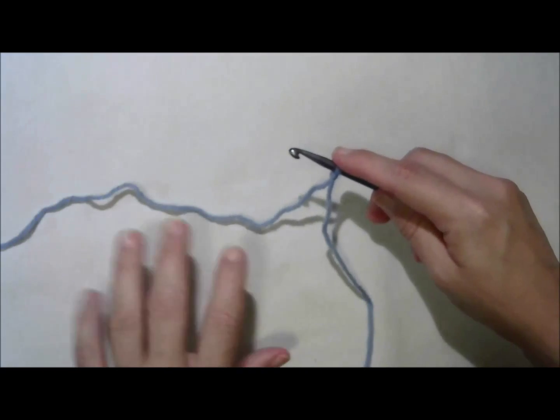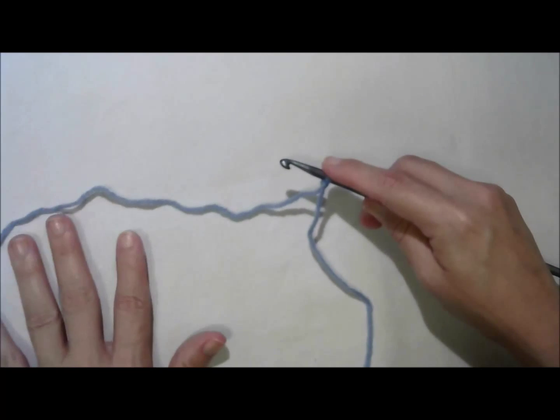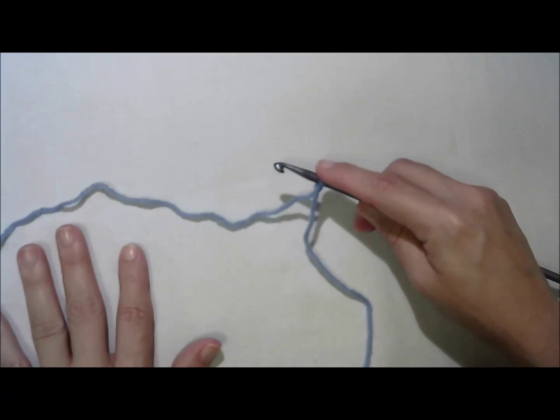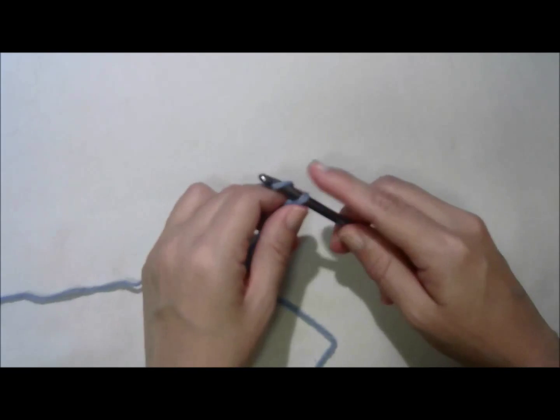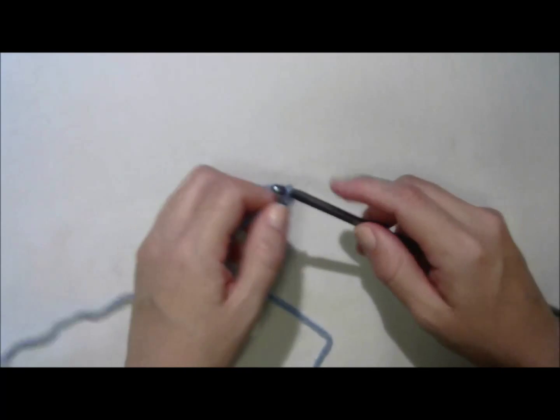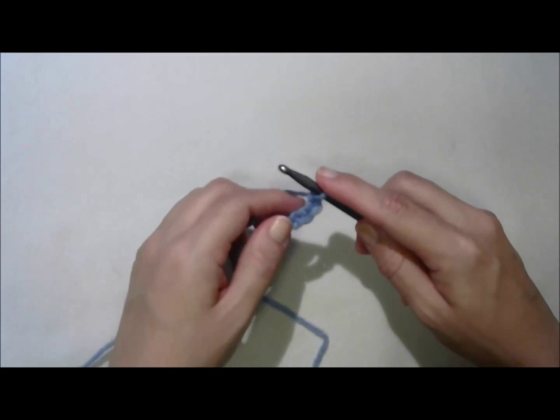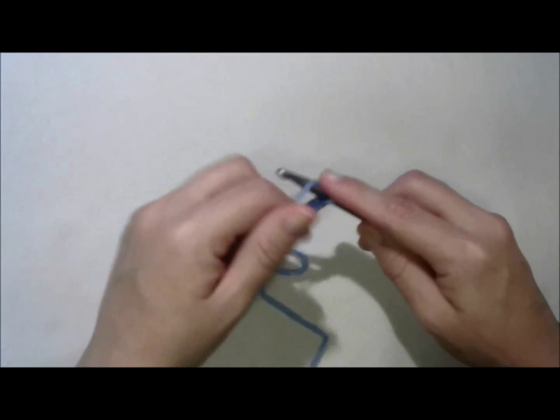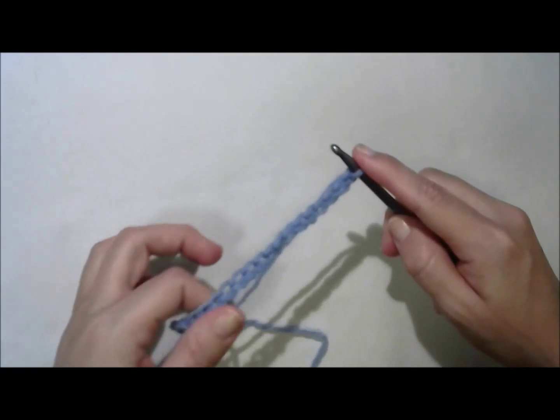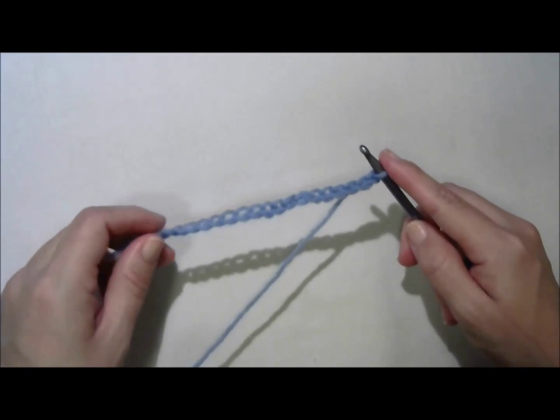So I'm going to make a base chain of, let's say, 20 stitches. I'll get this done, and I will meet you there. 17, 18, 19, and 20. Now, there's my base chain.